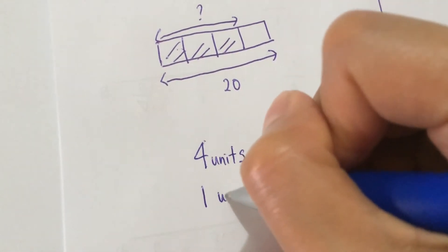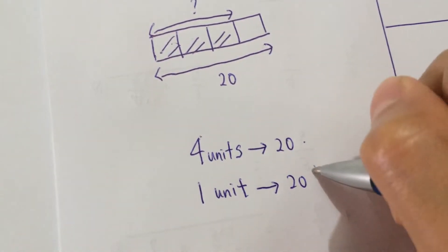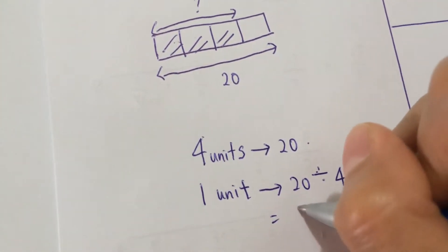You find 1 unit. 1 unit would be 20 divided by 4. That gives me 5.